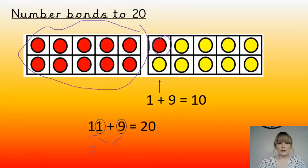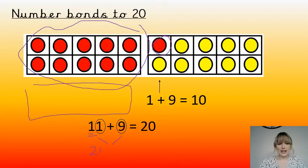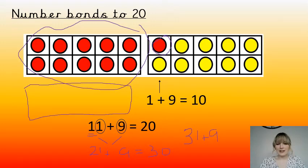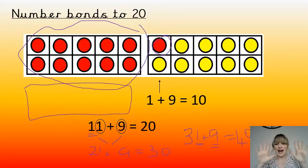And if we carry this on — 21, we added another 10. So imagine you've got 10 more counters in that 10-frame. 21 add 9 would be another 10, so we add 10 with 1 and 9. 11 and 9 is 20, 21 and 9 would be 30, 31 and 9 would be 40. So whenever we've got a 1 and a 9 in our ones, we can put them together because we know 1 and 9 makes 10. So we know that 11 and 9 is 20.